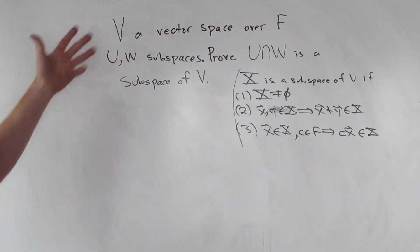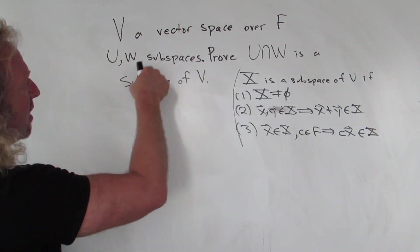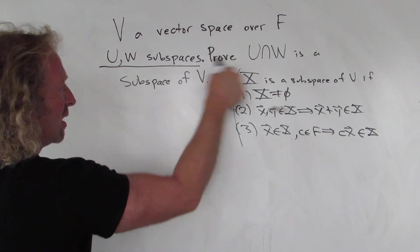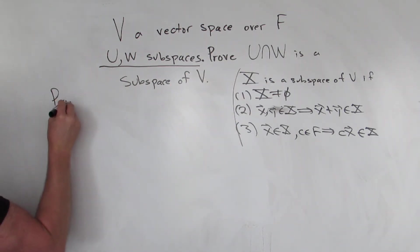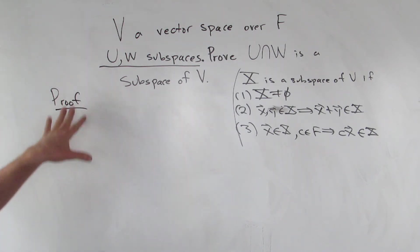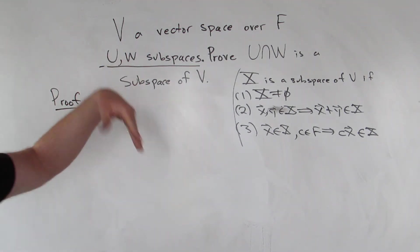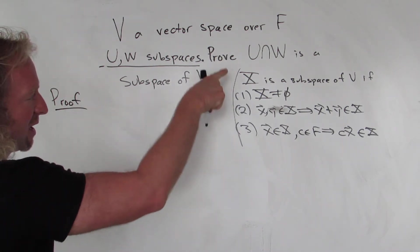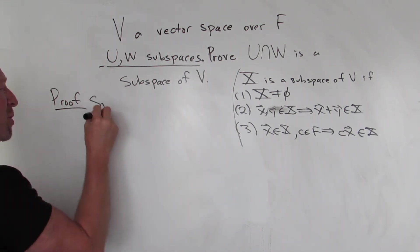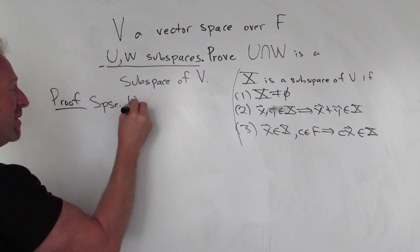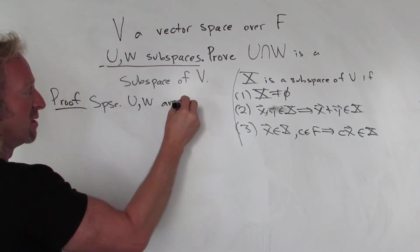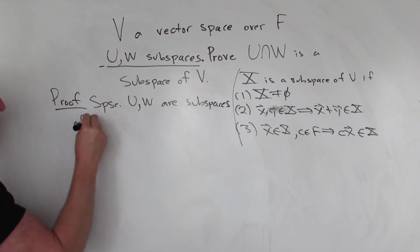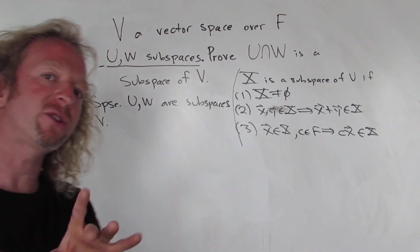So in this problem, this is a proof, so we'll start by assuming that U and W are subspaces and prove that the intersection is a subspace. Suppose U and W are subspaces of V, where V is a vector space over our field F.